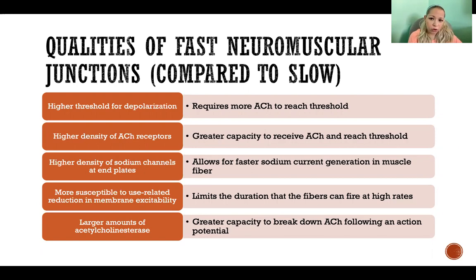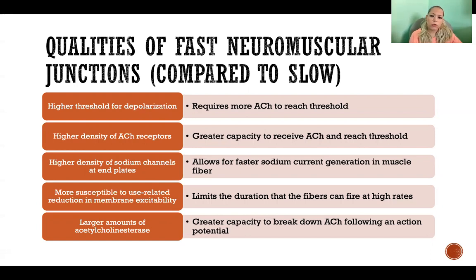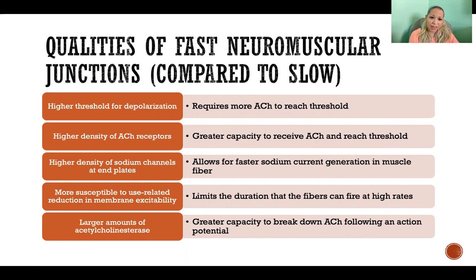Also, in a fast neuromuscular junction, there will be a higher density of acetylcholine receptors than in a slow neuromuscular junction — a high density of acetylcholine receptors — so more receptors that are able to receive the greater amount of acetylcholine necessary to reach threshold. There will also be a higher density of sodium channels at the motor end plate of the muscle fiber that's receiving the signal, meaning more channels to allow sodium into the muscle fiber.